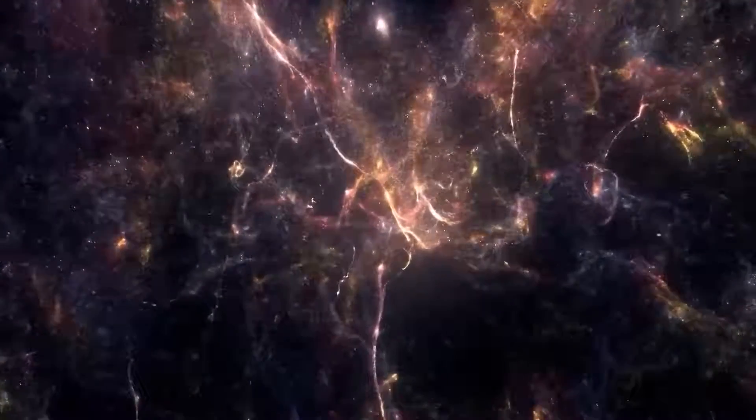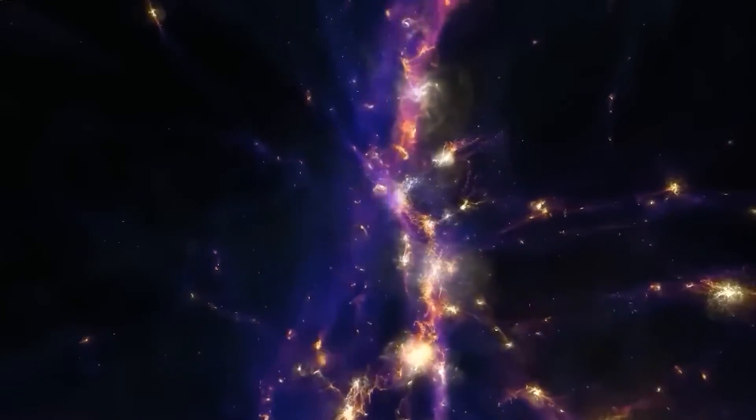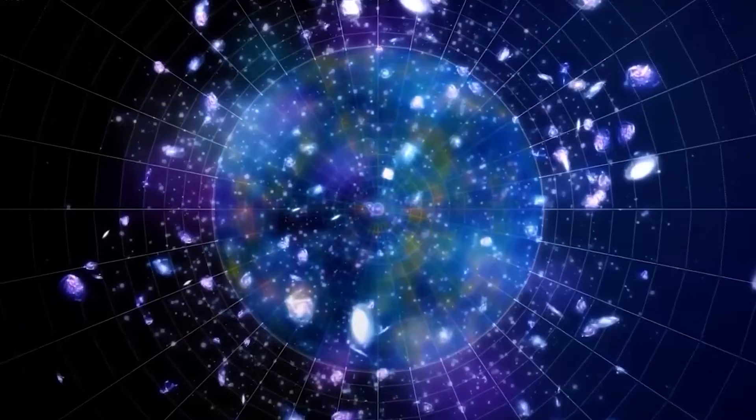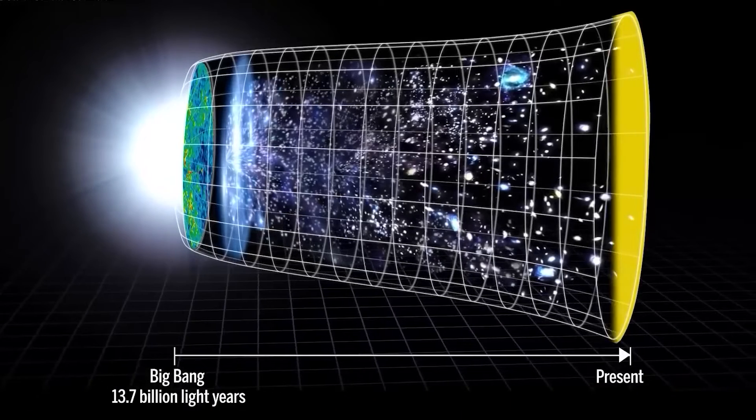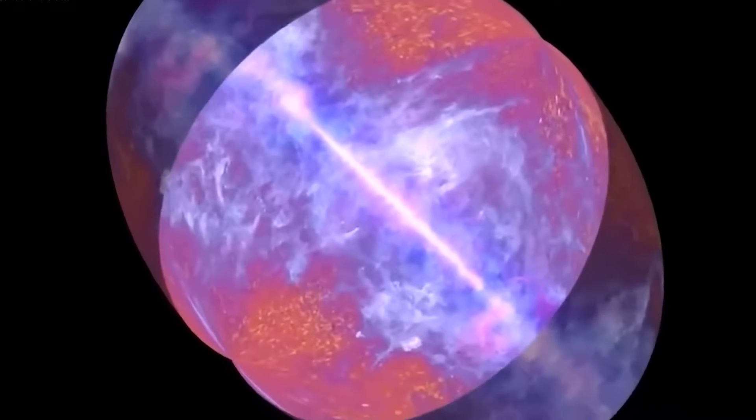In this model, the universe undergoes a series of expansions and contractions, with each cycle initiated by a Big Bang and culminating in a Big Crunch. This notion challenges our perception of the universe as a linear progression, suggesting that there may have been universes before ours, and will be universes after ours, each with its own unique set of physical laws.